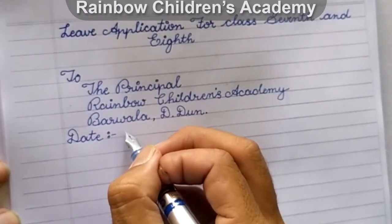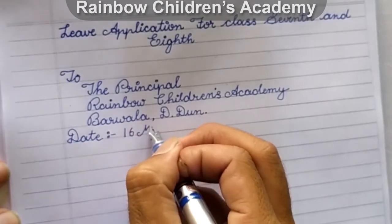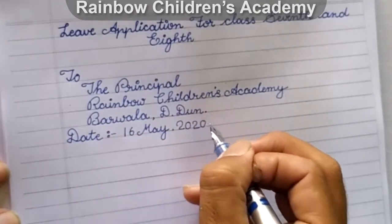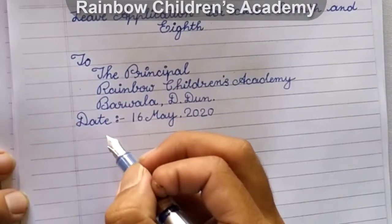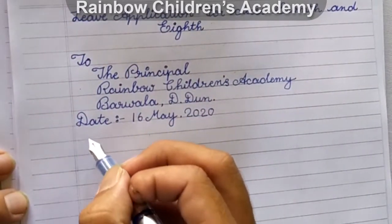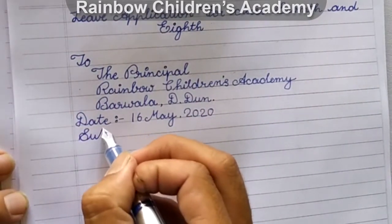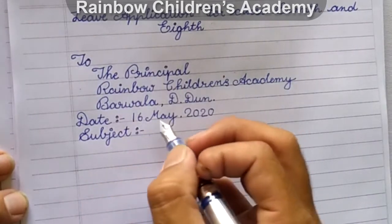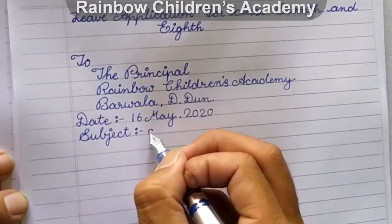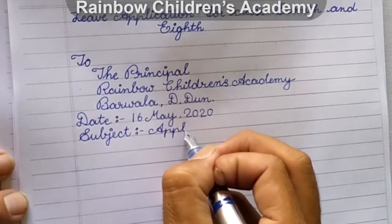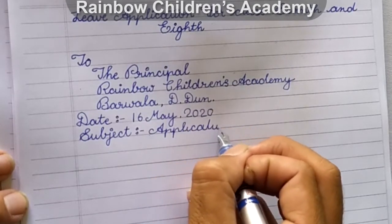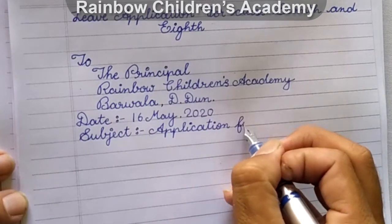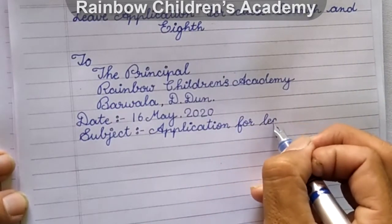In my case it is 16th May. When you write the month — May, February — write it in alphabets; that will be good. Then comes the subject, which should always be in one line. It should be short. It should not be very big. For example: Application for Leave.